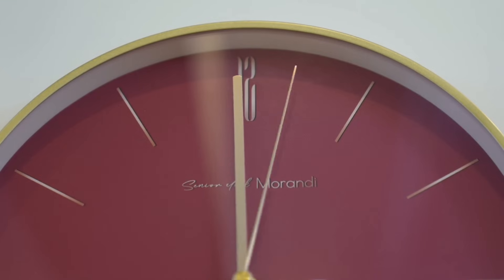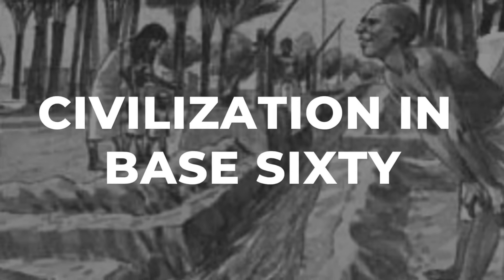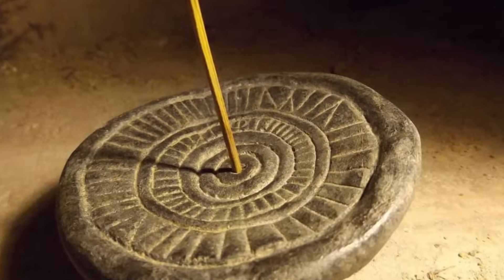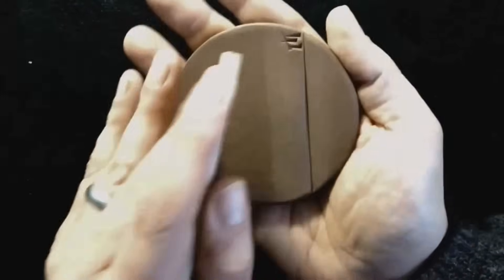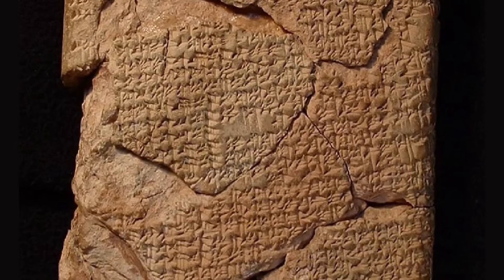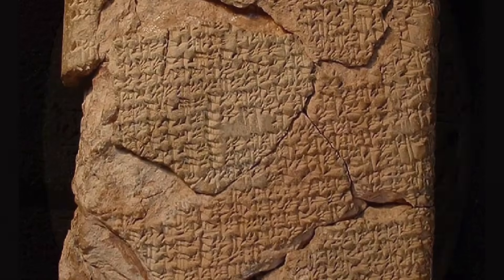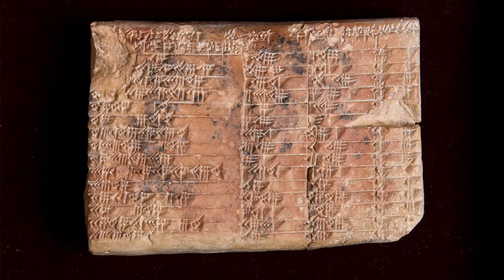Picture a world where numbers aren't just for counting sheep or coins, but for slicing up everything: grain, land, even the hours in a day. In ancient Mesopotamia, scribes pressed wedge-shaped marks into clay, not just to keep track of taxes, but to solve a deeper problem. How do you split things up so everyone gets a fair share, no matter the number of people or the size of the pie? For this, they turned to 60.